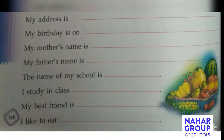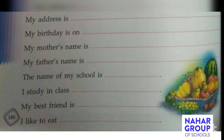Next, 'My best friend is.' Dear students, you will write here your best friend's name. Suppose your best friend is Shweta Gupta, so you will write: my best friend is Shweta Gupta. Next, 'I like to eat.' Which fruit do you like to eat? Suppose you like mango, so you will write: I like to eat mango. Or any other fruit name you can write here.